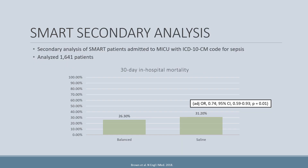Patients in the SMART trial with sepsis benefited more profoundly from balanced fluids, which prompted a secondary analysis published in 2018 looking specifically at medical ICU patients with an ICD-10 code for sepsis — a little over 1,600 patients. The primary outcome was 30-day in-hospital mortality. The 30-day in-hospital mortality rate in the balanced group was 26.3% compared to 31.2% in the normal saline group — a difference of 4.9% and an absolute risk reduction yielding a number needed to treat of 20. This is a very profound finding.